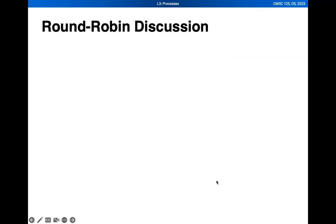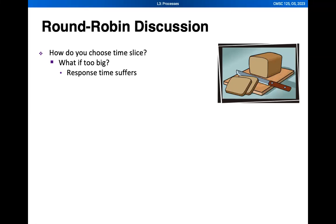How do you choose the time slice? It depends on the processes we have. If the time slice is too big, then response time suffers. For example, if you give a time slice of 50 milliseconds, you have to wait 50 milliseconds to get a response for P2, compared to only 10 milliseconds with a smaller slice. If the time slice is infinite, we essentially revert to the simplest algorithm, which is FCFS.